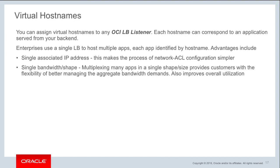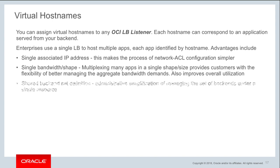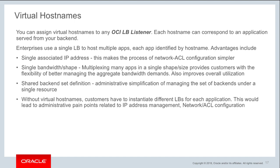OCI offers a number of different bandwidth shapes, from 400 Mbps up to 800 Gbps, so you can utilize your load balancer more effectively by having multiple applications served by a single load balancer. You can also share backend definitions, making administration of your backend servers easier. Without virtual hostnames, you would have to create multiple load balancers for each application, so virtual hostnames make it operationally much cleaner.